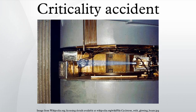Criticality occurs when sufficient fissile material is in one place such that each fission of an atom of the material, on average, produces a neutron that in turn strikes another atom causing another fission. This causes the chain reaction to become self-sustaining within the mass of material. Criticality can be achieved by using metallic uranium or plutonium, or by mixing compounds or liquid solutions of these elements.